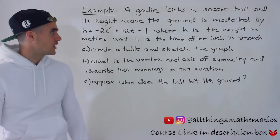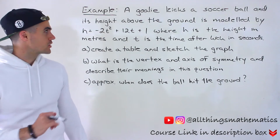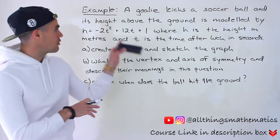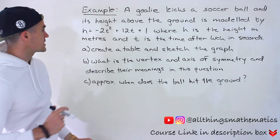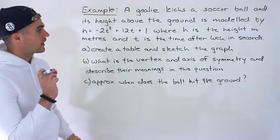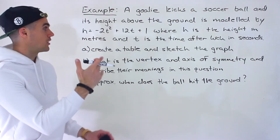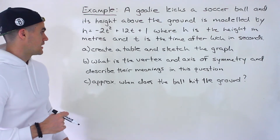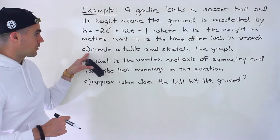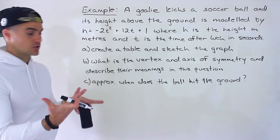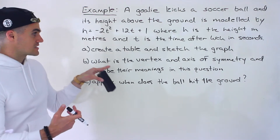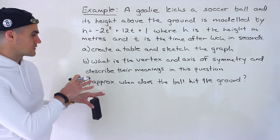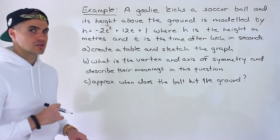Welcome back, Patrick here. Moving on to the next question dealing with quadratic relations. We're told a goalie kicks a soccer ball, and its height above the ground is modeled by H equals negative 2t squared plus 12t plus 1, where H is the height in meters and T is the time after the ball is kicked in seconds. In part A, we create a table and sketch the graph. Part B asks for the vertex and axis of symmetry and their meanings. Part C asks us to use the graph to find approximately when the ball hits the ground.